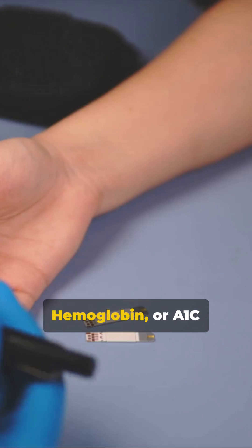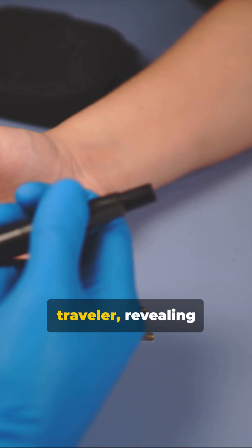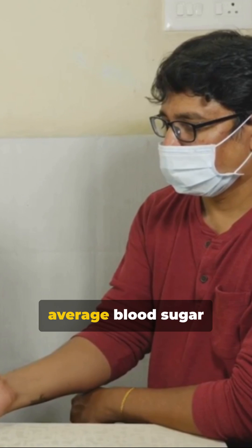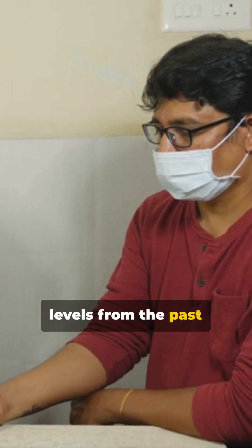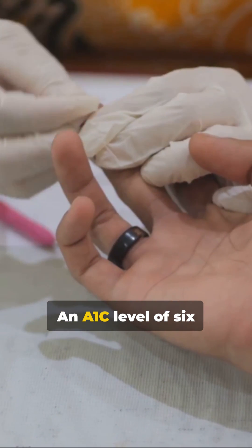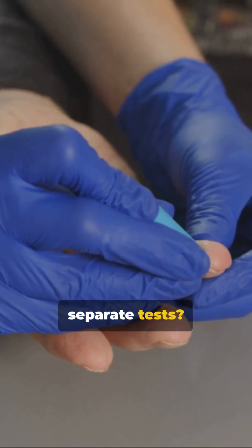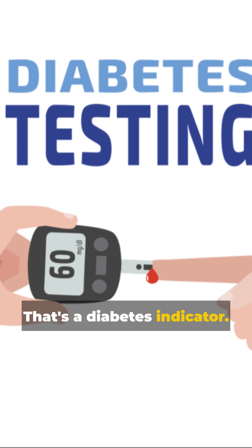The glycated hemoglobin or A1c test is a time traveler revealing average blood sugar levels from the past two to three months. An A1c level of 6.5% or higher on two separate tests. That's a diabetes indicator.